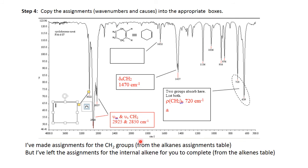Step four: copy the assignments — the wave numbers and causes — into the appropriate boxes on the IR scan. Because it's still only the second lab, I've gone ahead and filled in the assignments for the methylene group, the three we identified. I've left for you to fill in the assignments for the alkene part, and there are three of them, including one down in the lower region.